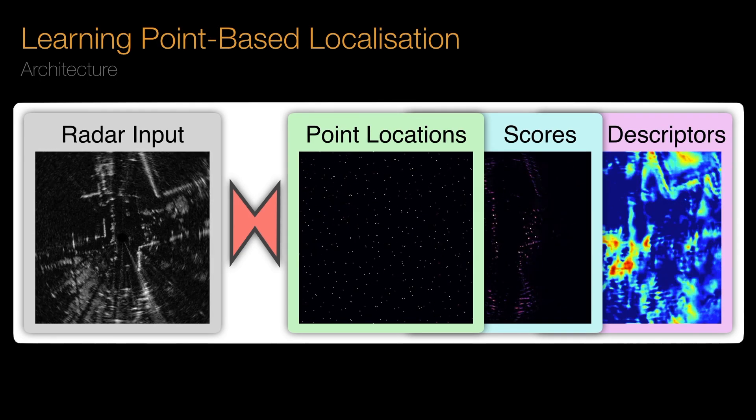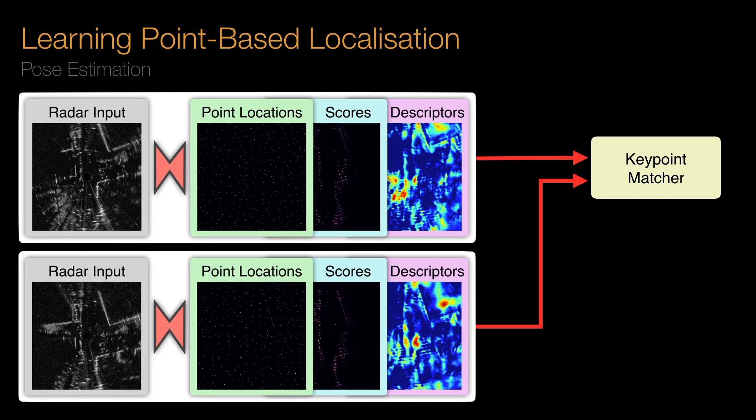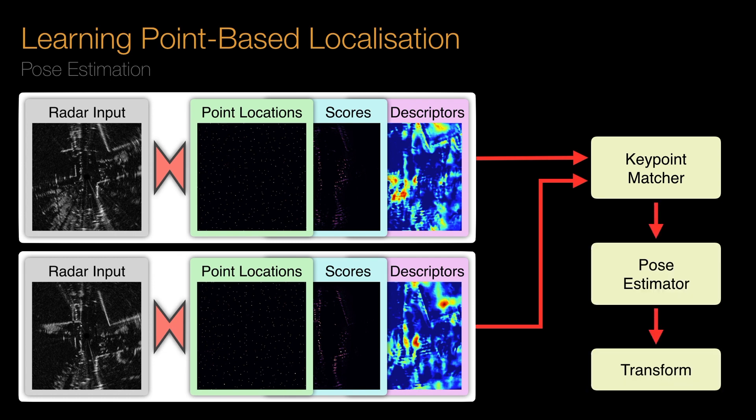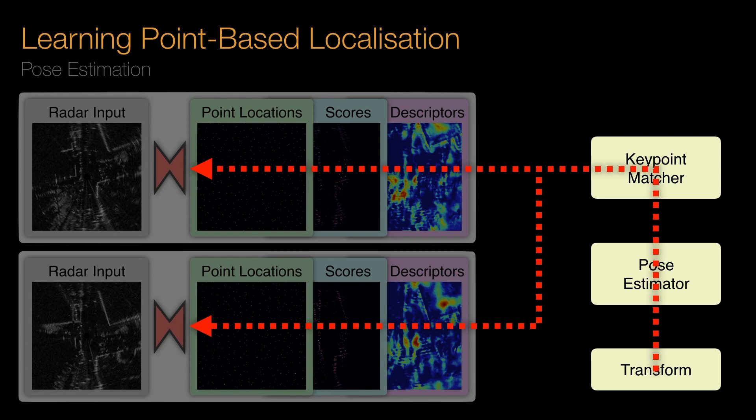For the purposes of motion estimation, keypoints from two proximal scans are fed to a point matcher, comparing keypoint descriptors and pose estimator to predict the transform between radar scans. Crucially, both the keypoint matcher and pose estimator are fully differentiable, and so we can learn keypoint location, scores and descriptors that are optimal for this task and radar modality.